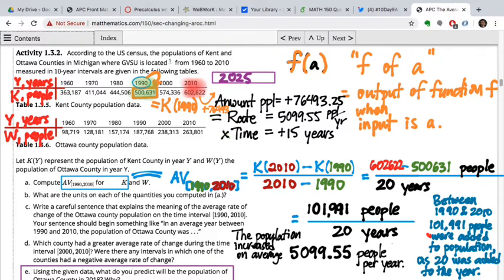Add it to the y value we had previously. So I'm adding 76,493 to the 2010 population. What did you get? 679,115. Let's round it. There we go.